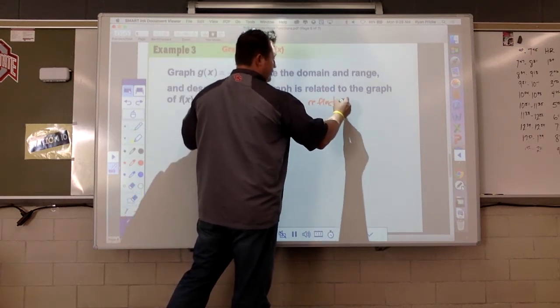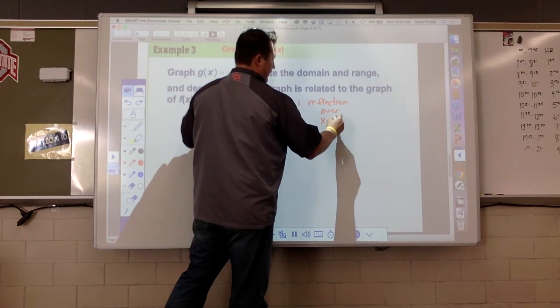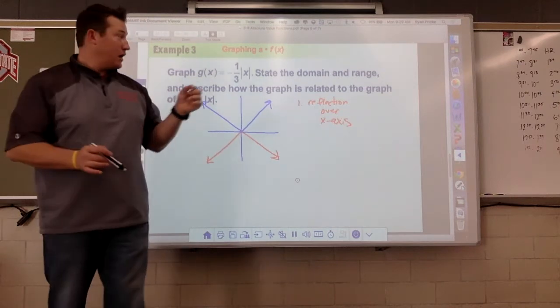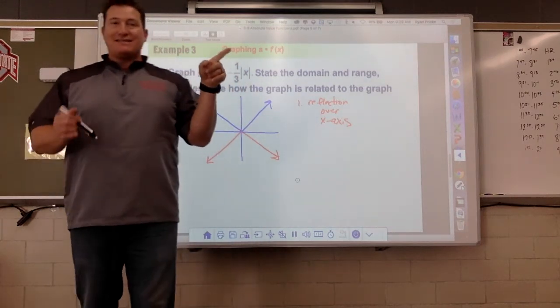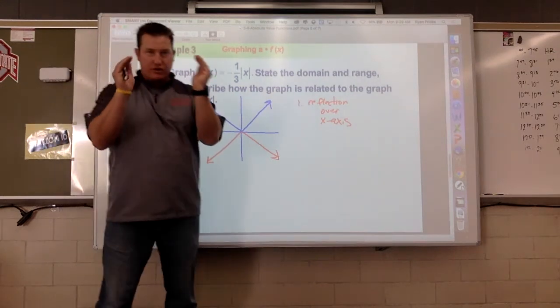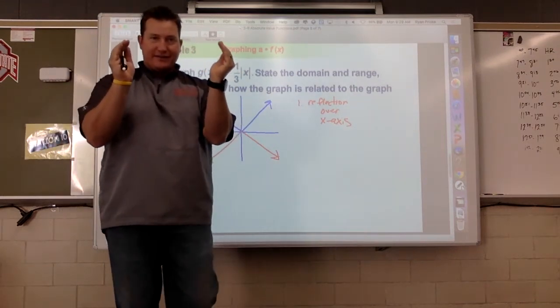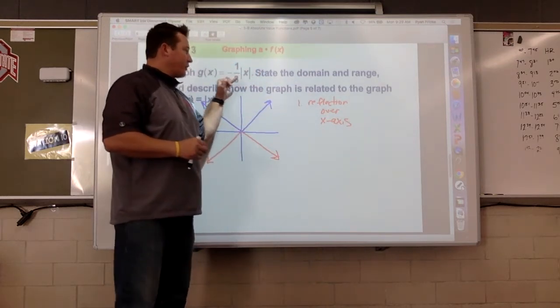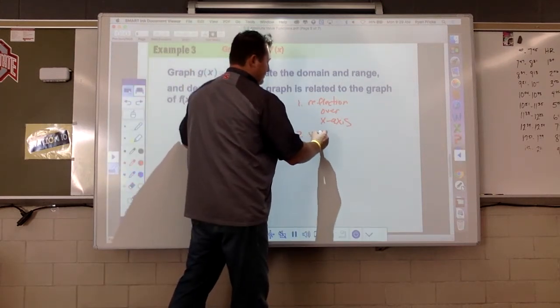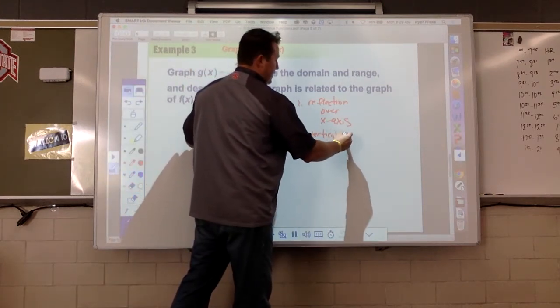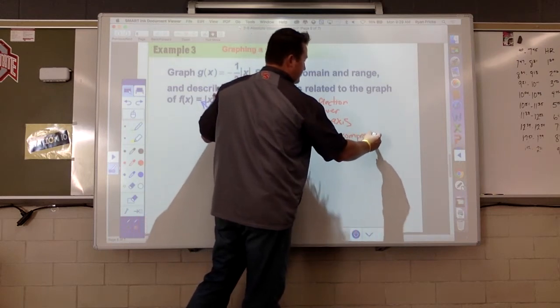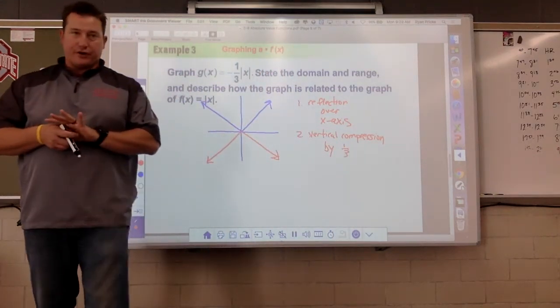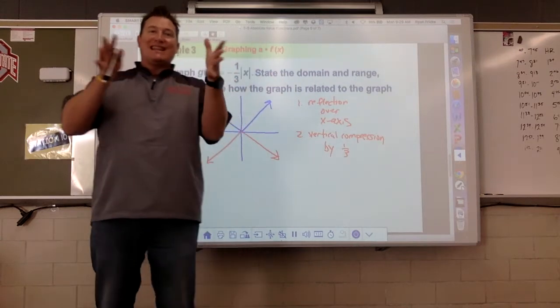So we could write that down. First thing is a reflection. The second thing is what does the one-third do? Well, one-third, it's not in with my expression, if it's not inside, it's not going to be a horizontal move. So this is a vertical compression. That's right, I heard somebody say it. But again, we just like to put in there by whatever factor it is, in this case it's by one-third. So that means it's going to get less steep.